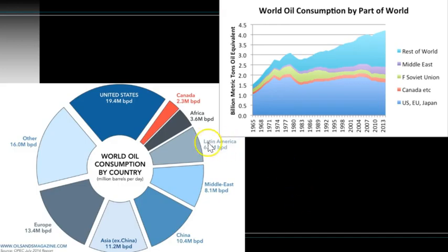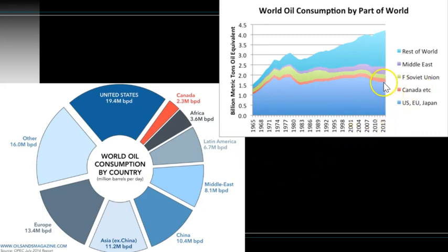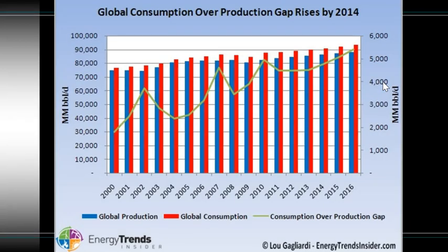The United States is currently the biggest oil consumer, though China and India are rising every year, and Europe is not far behind. Oil consumption in the US, EU, and Japan has actually gone down slowly. It's in the rest of the world where rising affluence is driving consumption up. An interesting side note: global consumption actually tops global production, and we make up the gap with stored reserves.